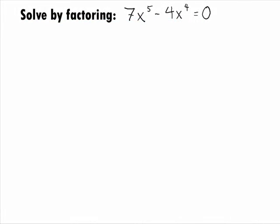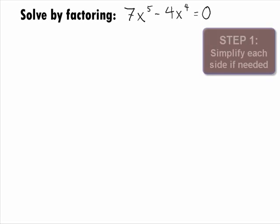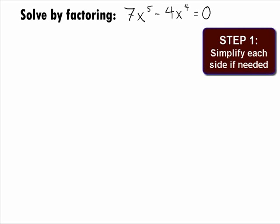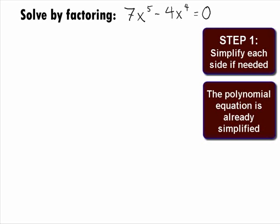In this example, we want to solve the polynomial equation 7x to the 5th minus 4x to the 4th equals 0 by factoring. In Step 1, we want to simplify each side if needed. Our equation is already simplified.